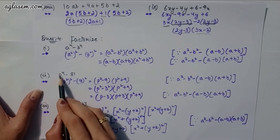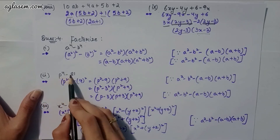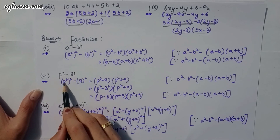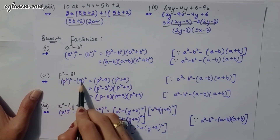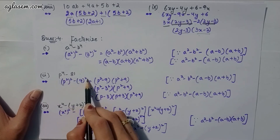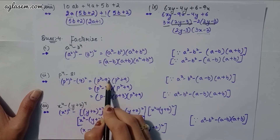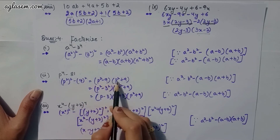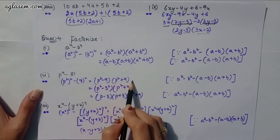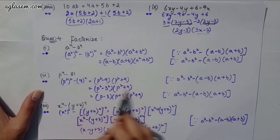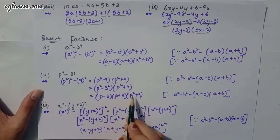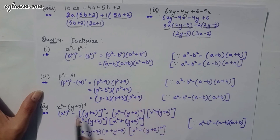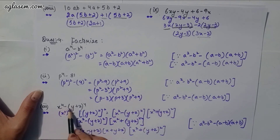Second part: p⁴ − 81. Write as (p²)² − 9². So (p² − 9)(p² + 9) = (p − 3)(p + 3)(p² + 9).